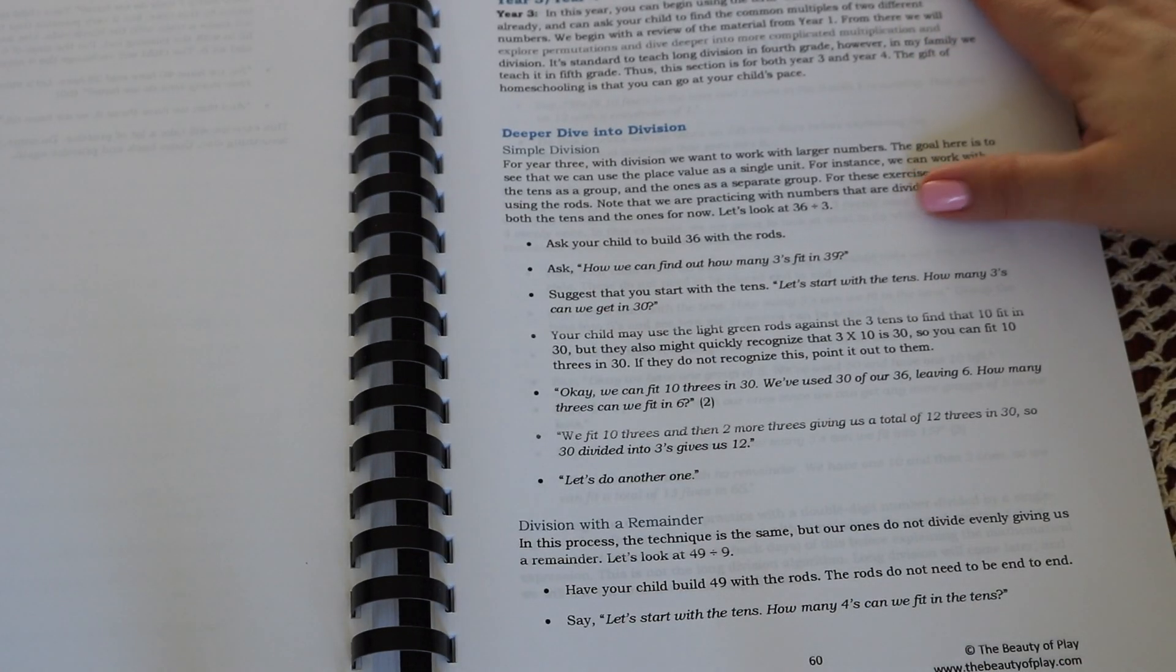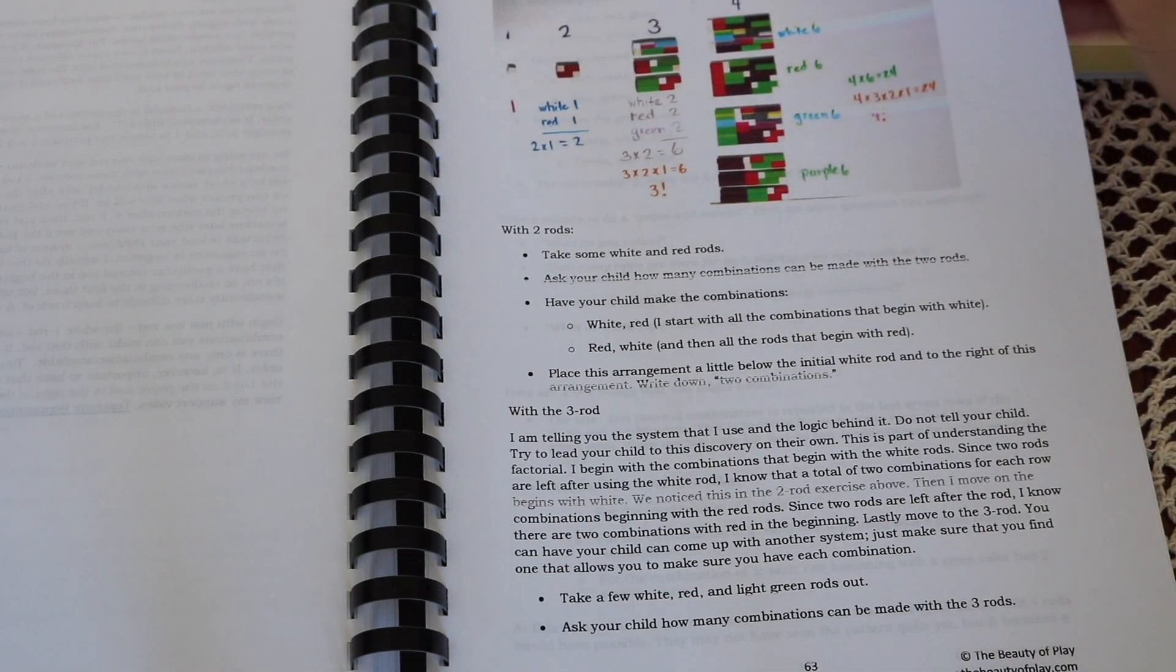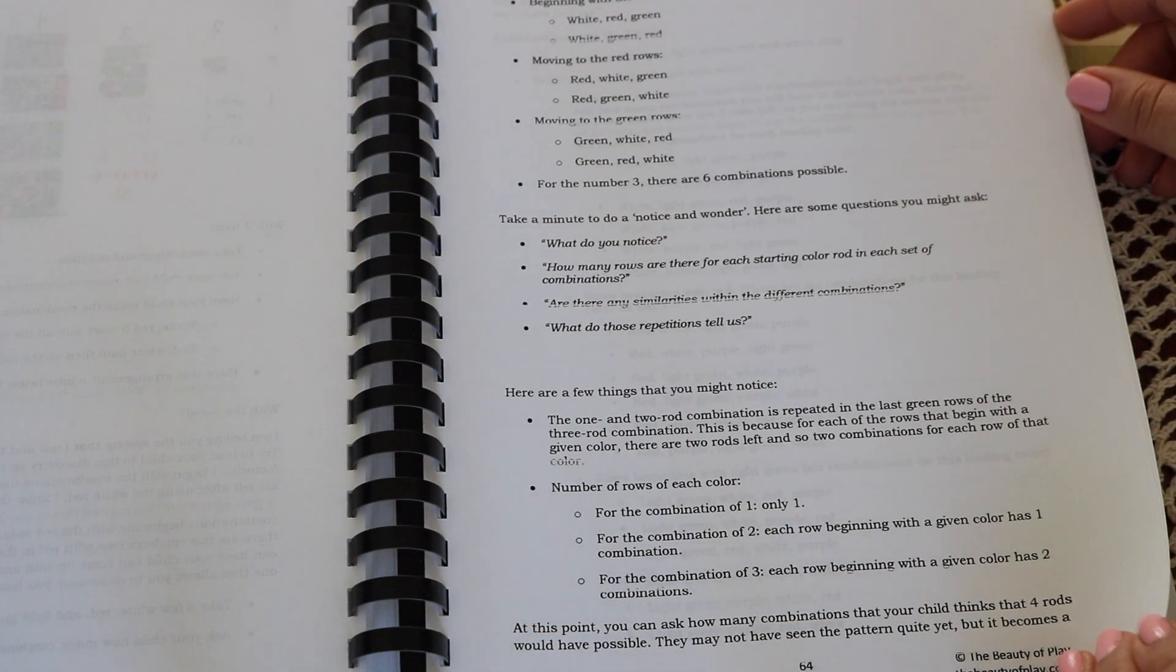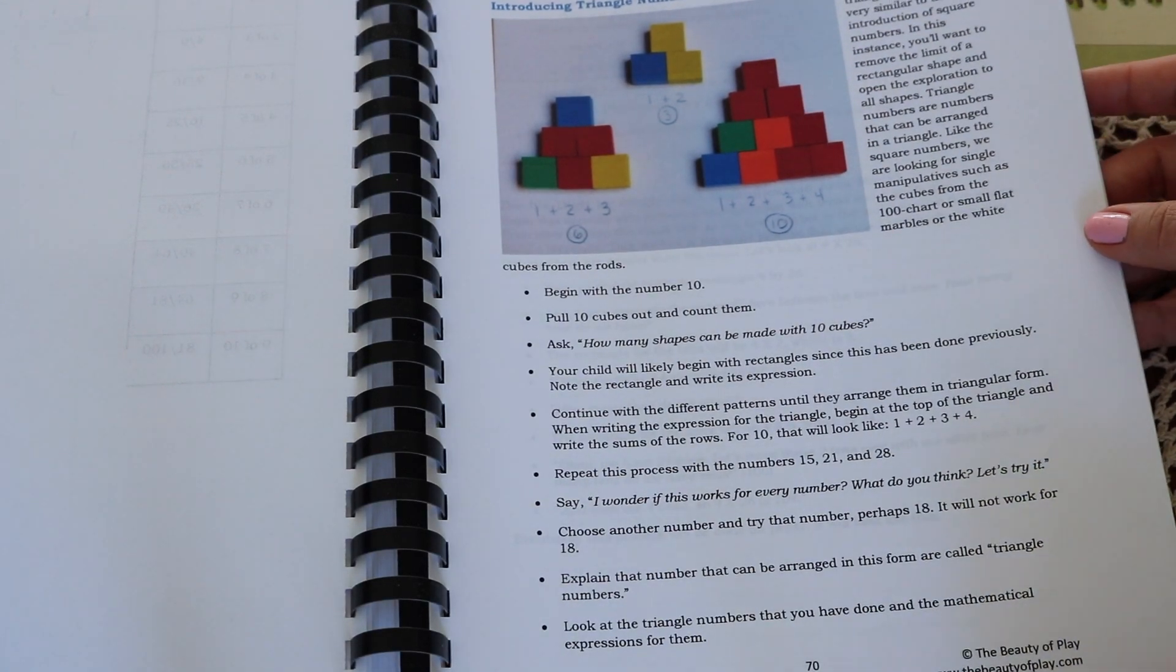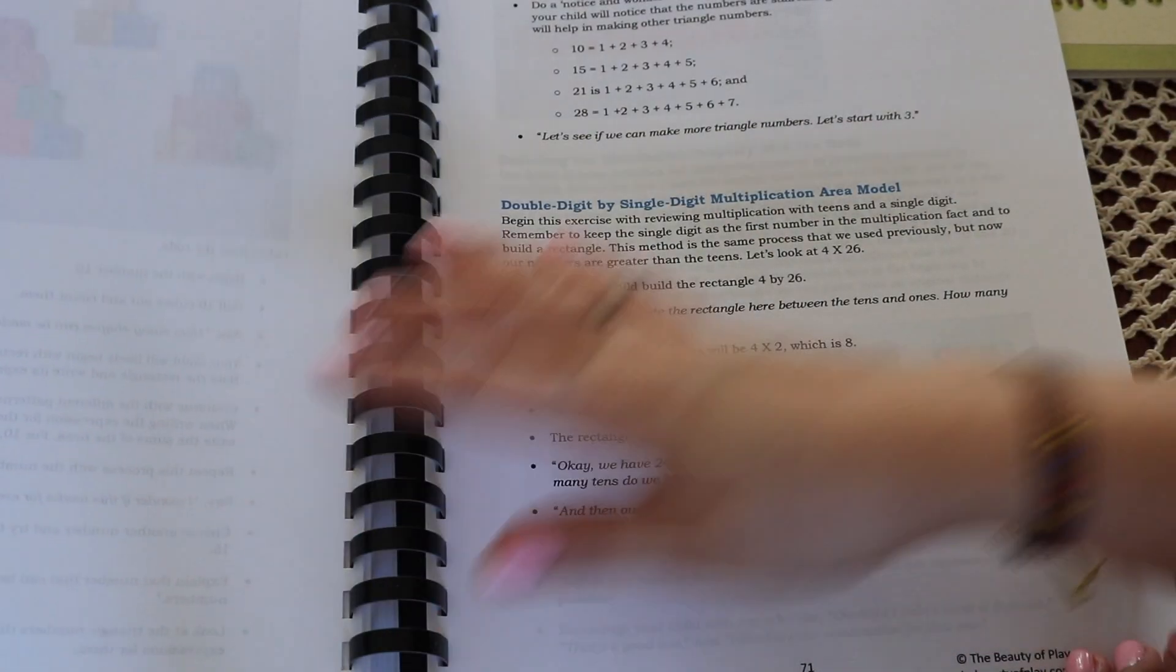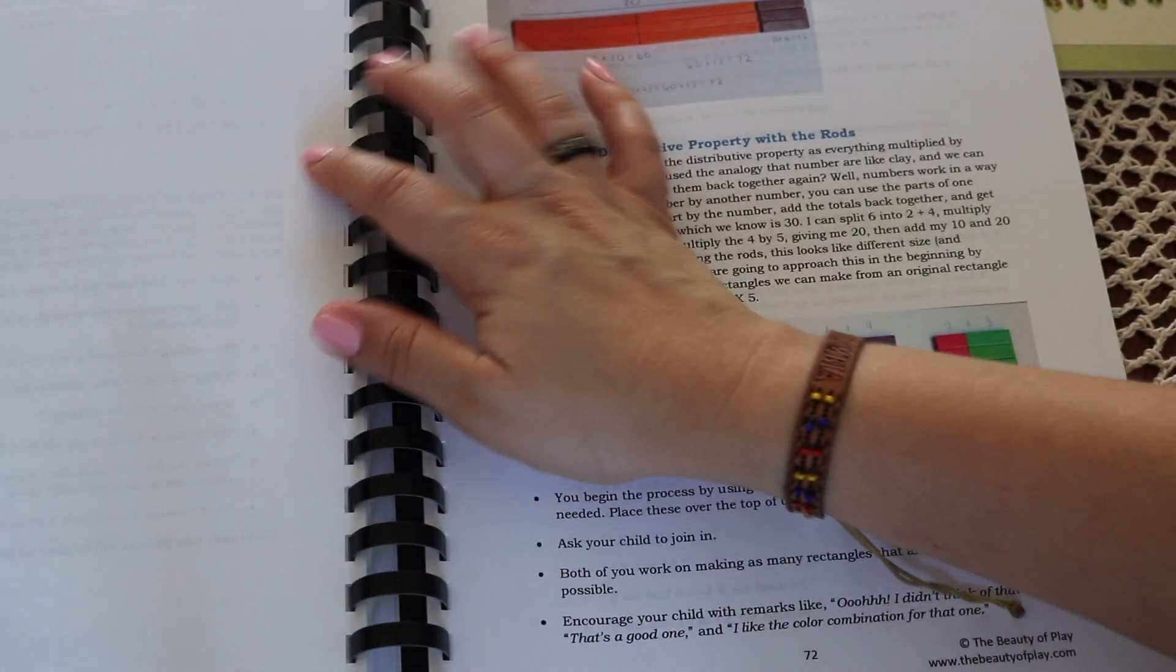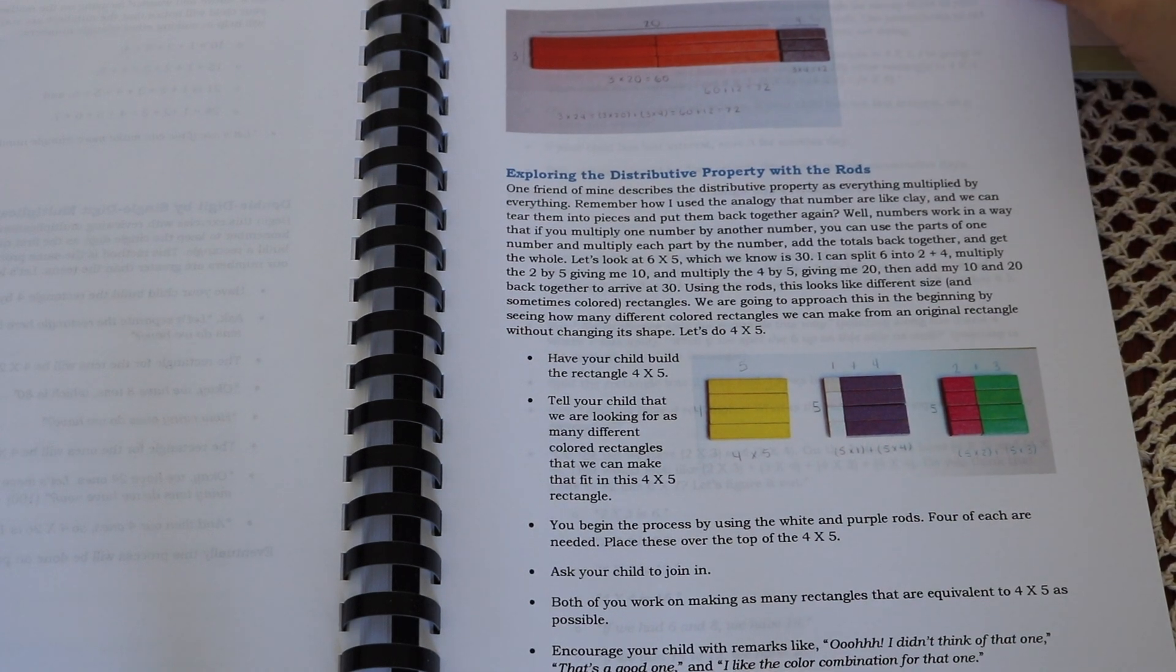Year three and four begins with a review of the material from year one, then progresses into teaching the multiplication and division algorithm. This year, we'll also begin to use the term common multiple, explore permutations, and dive deeper into more complicated math and division like division with remainder, introducing square and triangle numbers, double digits, teaching area, and more.